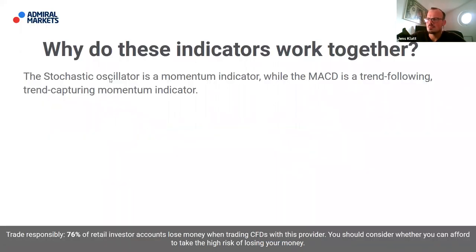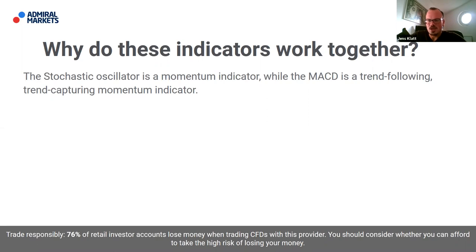All of this comes down to knowing yourself and trading psychology — you have to find out what kind of trader you are. If you discover you're someone who waits for breakouts and then tries to capture the resulting momentum, then you know which indicators work well with that approach. That's where it makes sense to combine the stochastic as a momentum indicator with the MACD as a trend-following momentum indicator.